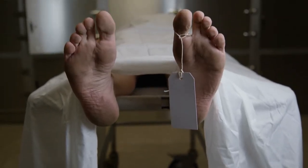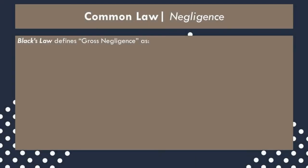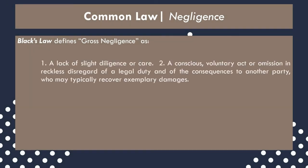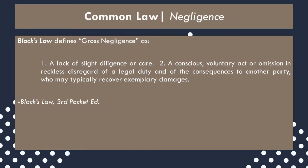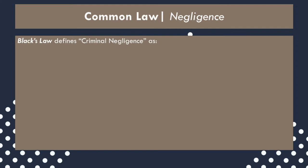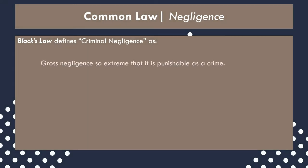Criminal negligence is the criminal mirror to tort negligence. In essence, an actor who engages in criminal negligence had a duty, the breach of which was the actual and proximate cause of damages to another's person or property. This negligence was of a type sufficient to bring criminal charges. Black's Law defines gross negligence as: "a lack of slight diligence or care; a conscious, voluntary act or omission in reckless disregard of a legal duty and of the consequences to another party." Black's Law defines criminal negligence as gross negligence so extreme that it is punishable as a crime.